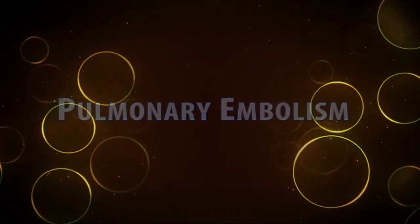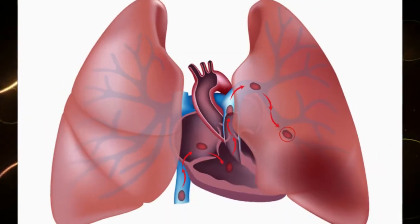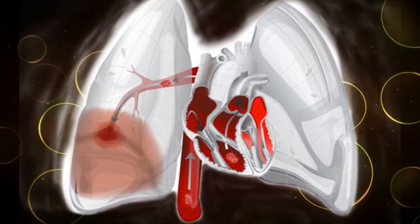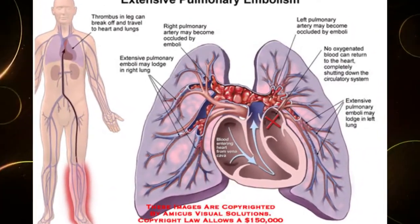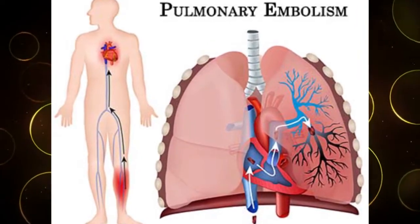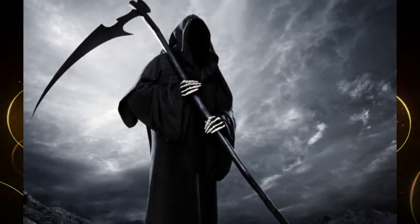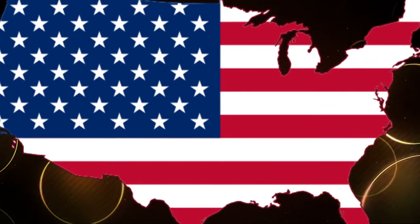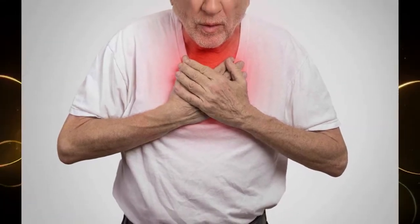Pulmonary embolism is the sudden blockage of a major blood vessel in the lung, usually by a blood clot. It is a type of thromboembolism. In most cases, the clots are small and not deadly, but they can damage the lung. If the clot is large and stops blood flow to the lung, it can be deadly. Pulmonary embolism causes about 200,000 deaths per year in the United States. A patient who has had one pulmonary embolus is at increased risk for having more.